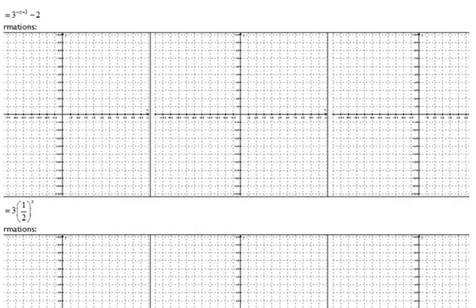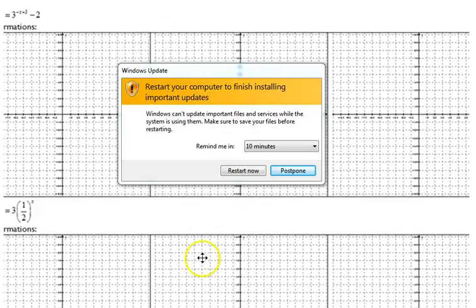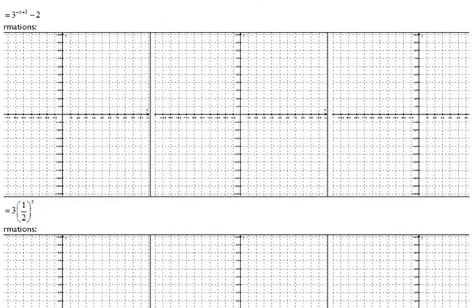We're graphing 3 to the negative x plus 3 minus 2. We start with the original base function. The base is 3, so on the first graph we're going to graph y equals 3 to the x. The key points we'll use are x equals negative 2, negative 1, 0, 1, and 2. We'll call each block as 1.